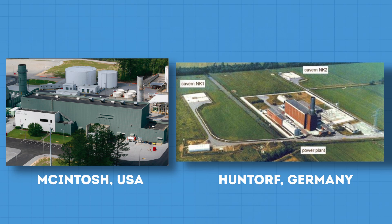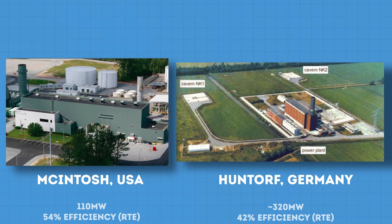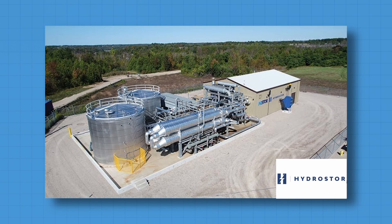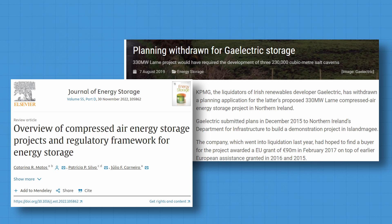So how developed is compressed air energy storage as a whole? There are only two large and operational CAES plants: one built in Germany in 1978, and the other in the US in 1991. Together their power capacity is 400 megawatts. However, they both use diabatic systems, which require natural gas.